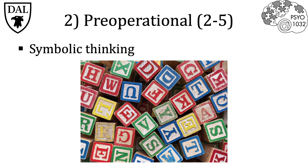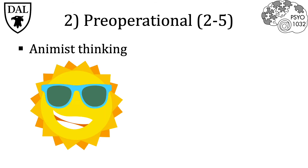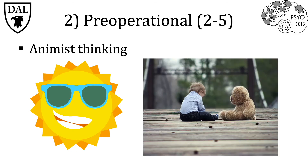In the second, pre-operational stage of cognitive development, Piaget believed that certain qualities of thinking begin to develop. The first is symbolic thinking — that is, using symbols like words or letters to represent ideas or objects. The second is animist thinking, which is the belief that inanimate objects are alive. For example, children might think the sun is alive because it follows them when they walk, or that their stuffed teddy is actually a real bear.